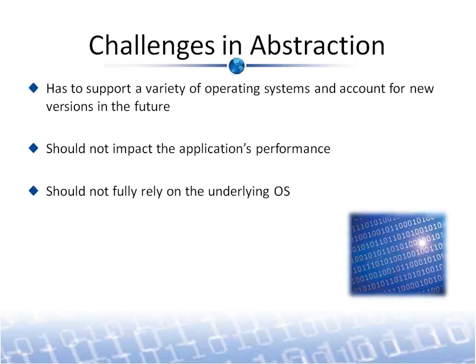Abstraction implementation should always utilize lower-level OS API features for better performance. It should also take advantage of compile-time translations to minimize runtime impact. Abstraction solutions should not fully rely on the underlying OS — if an OS misses a specific feature, the abstraction should provide that feature to ensure portability of the application.